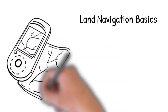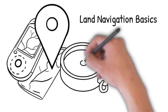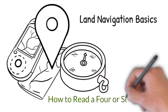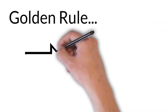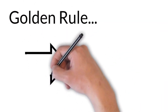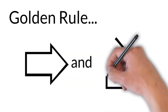So you need to plot a point on a map. You may have been given a 4, 6, or even 8 digit coordinate. This task may seem difficult at first glance, but by the end of this video you will have the tools to plot points like an expert. Let us start with the golden rule of plotting points: just remember right and up. This will make more sense in a little while.